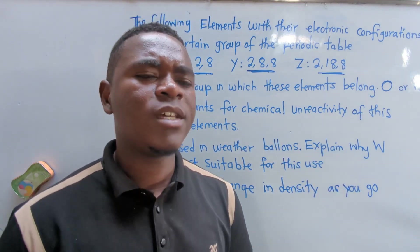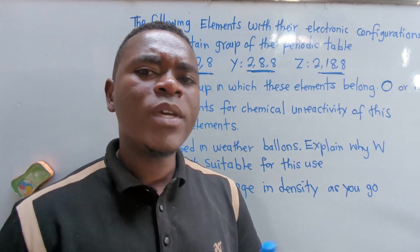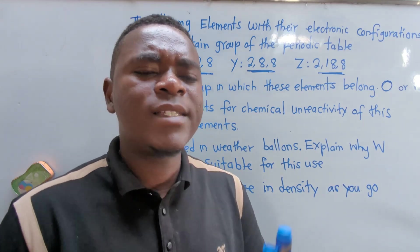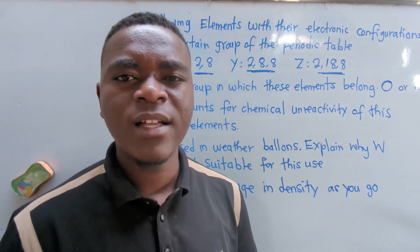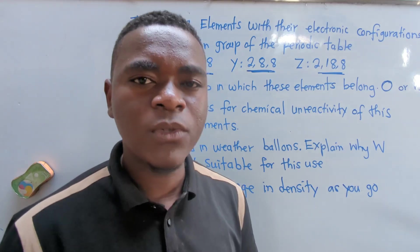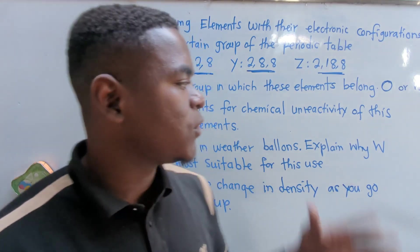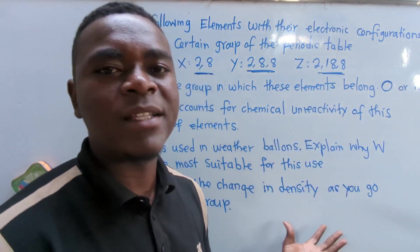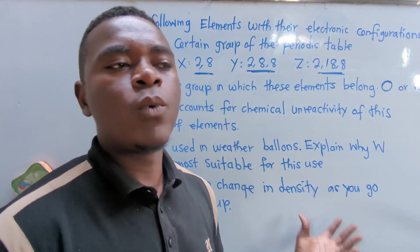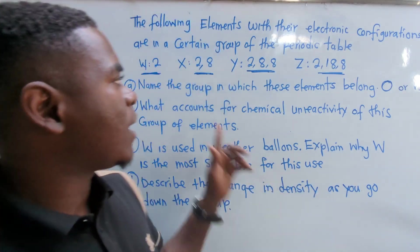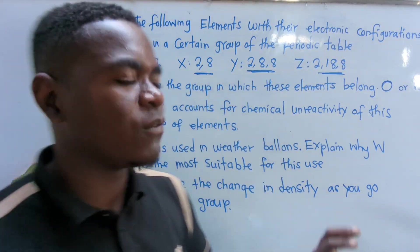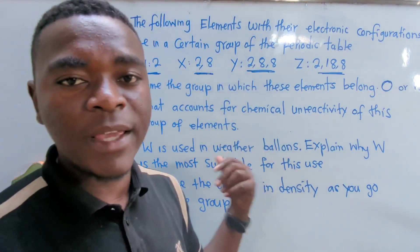Their outermost shells are full of electrons, which makes them not to have a tendency of losing or gaining electrons. This is what you are supposed to do. So you'll be answering this particular question with a periodic table given to you. So if you are to check, these are falling under group 8.